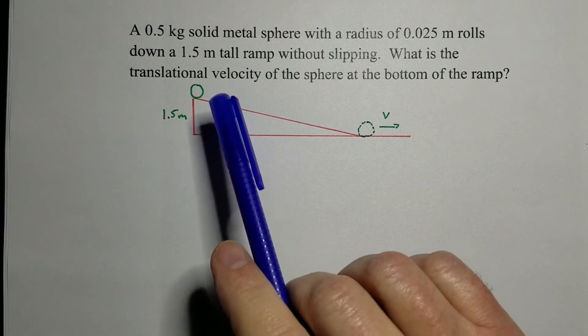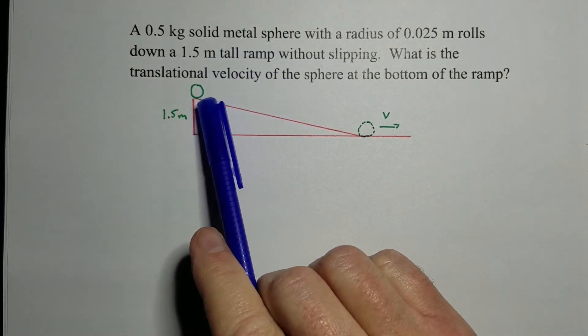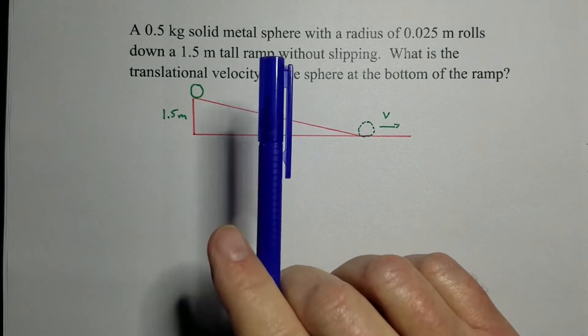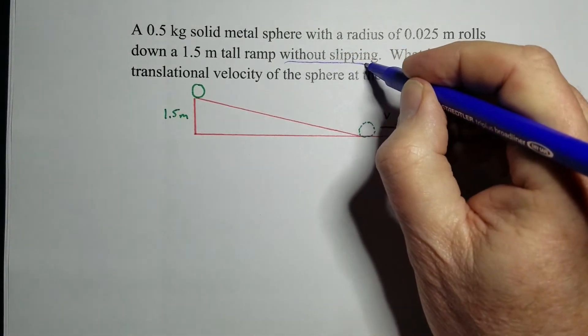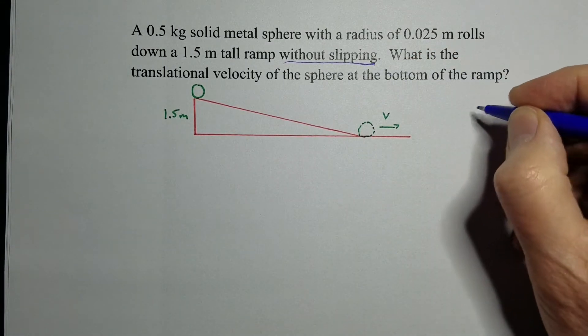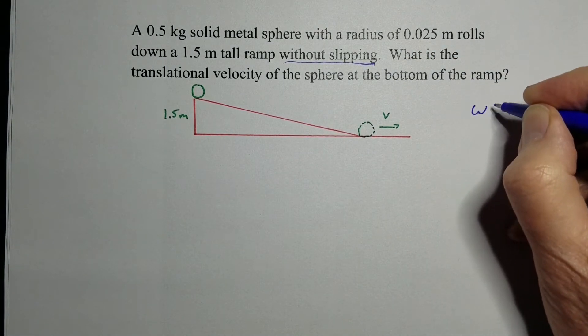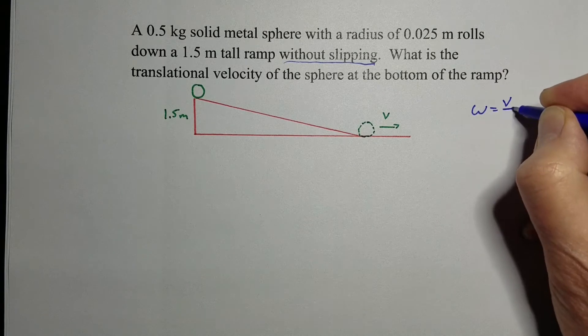Hi, this is Kenny Lee, and let's look at this problem where we got a solid metal sphere rolling down an incline without slipping. That's important, that phrasing right there, without slipping, because with that phrase there we know that omega is equal to V over R.